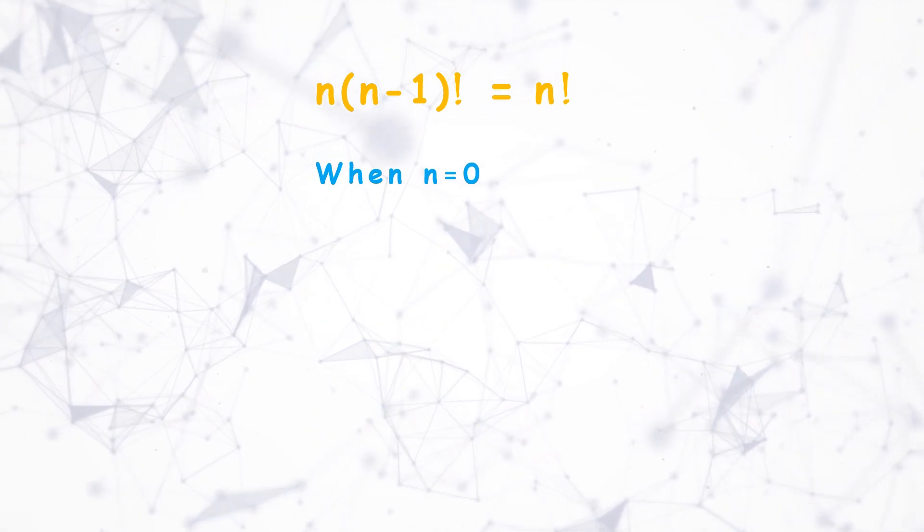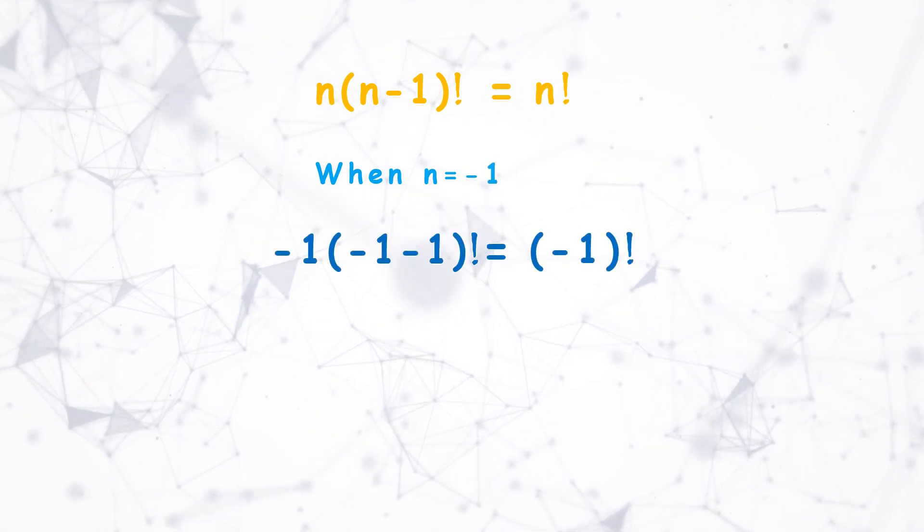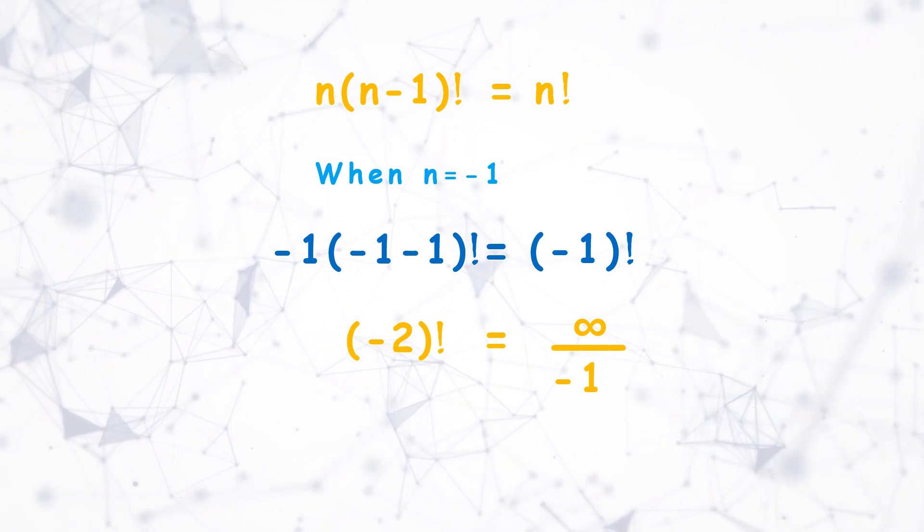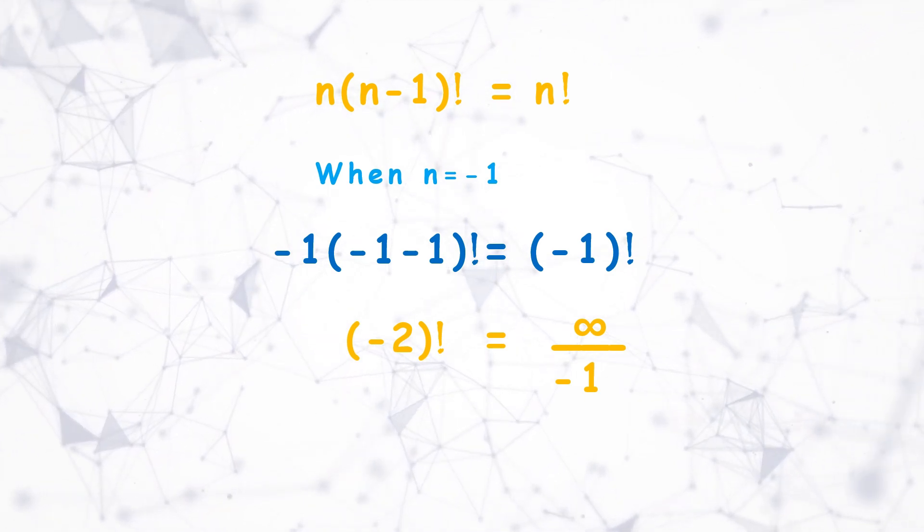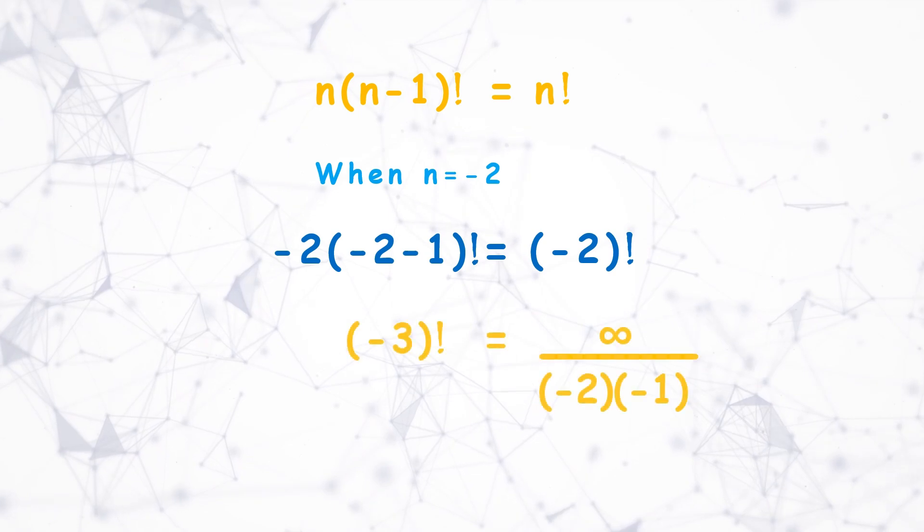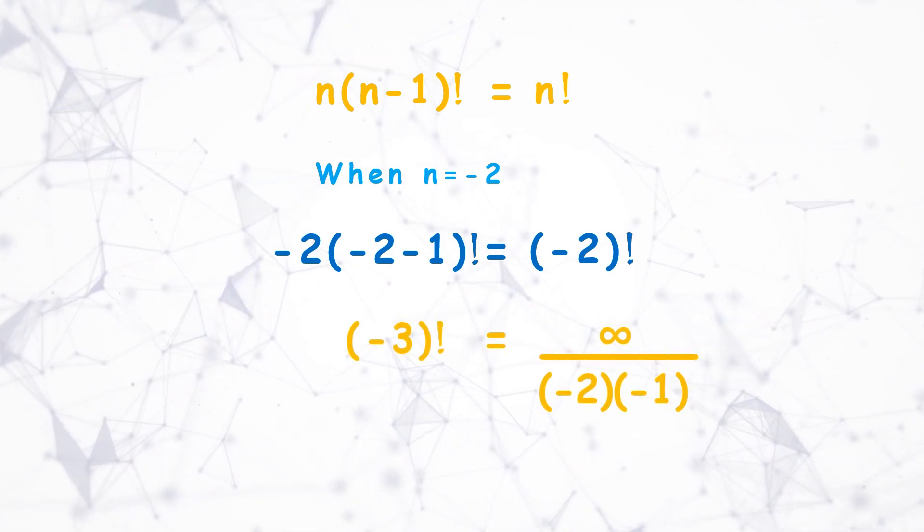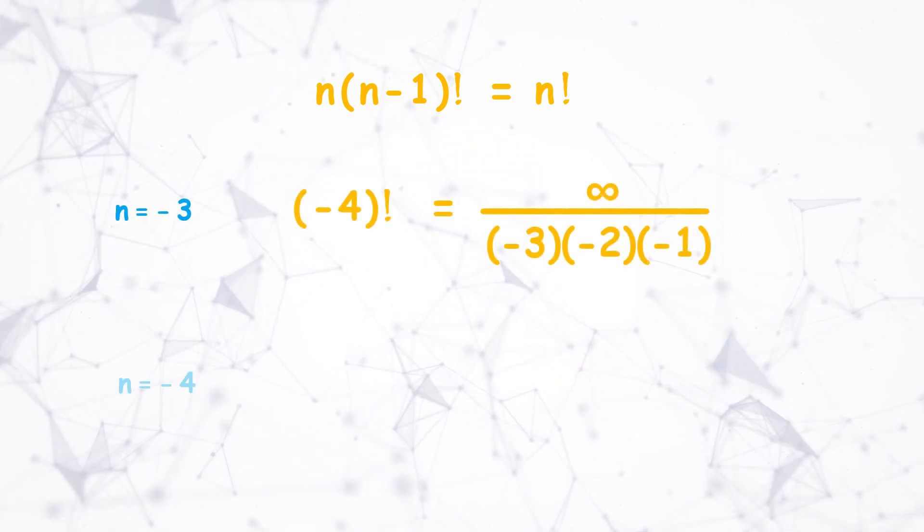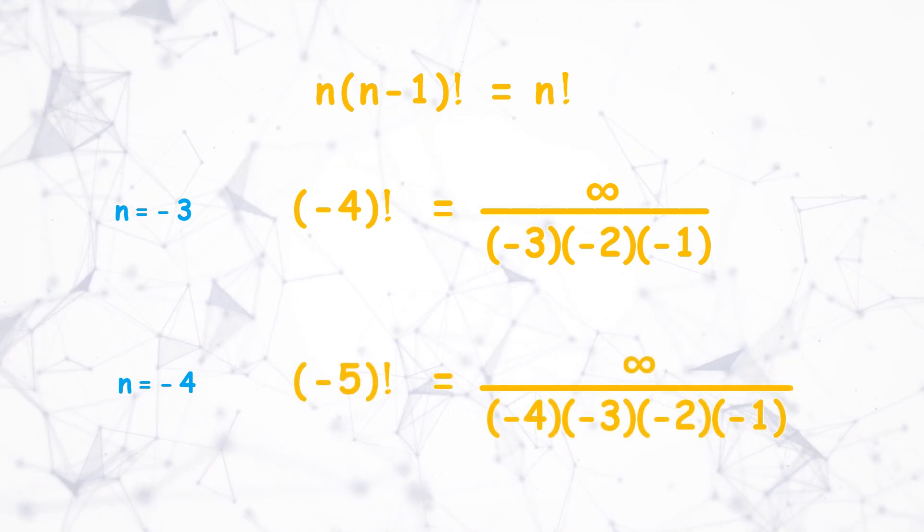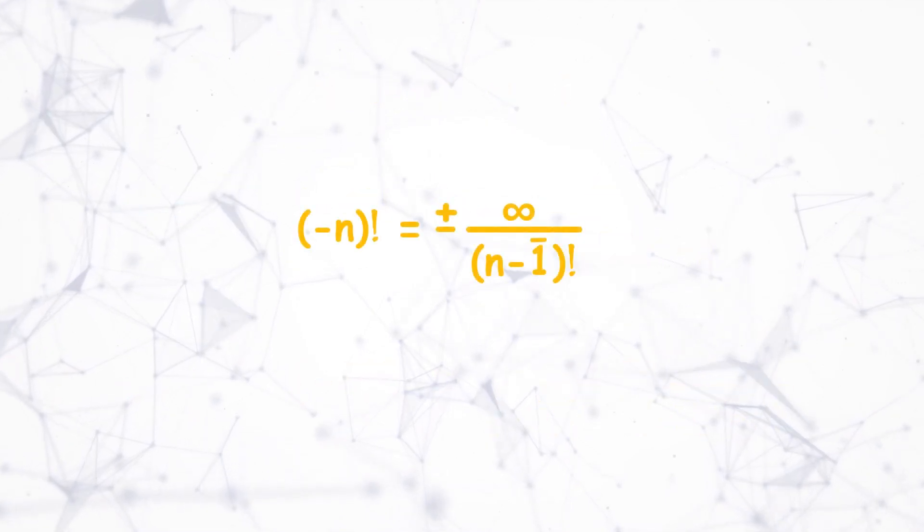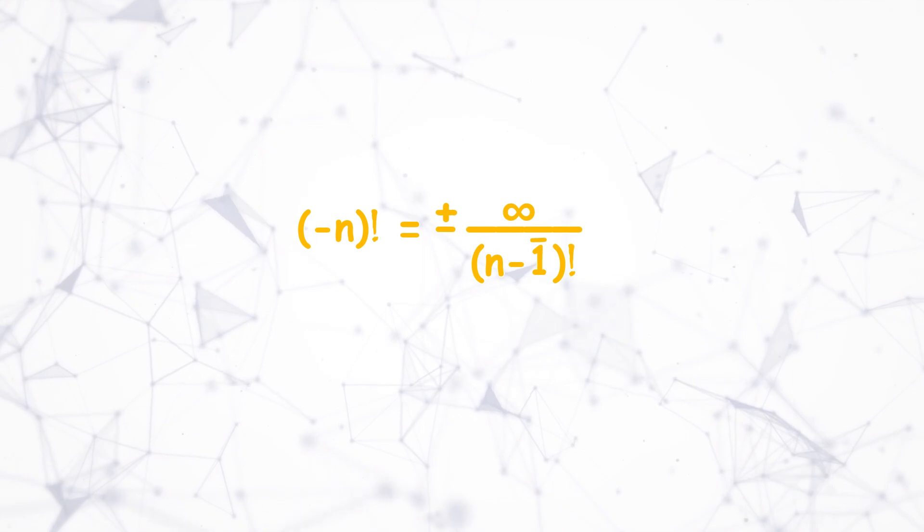Similarly for n equals minus 1 we get negative 2 factorial as infinity by minus 1. For n equals minus 2 we get this solution. And for other increments we get the same pattern. So the formula is generalized as plus or minus infinity by n minus 1 factorial.